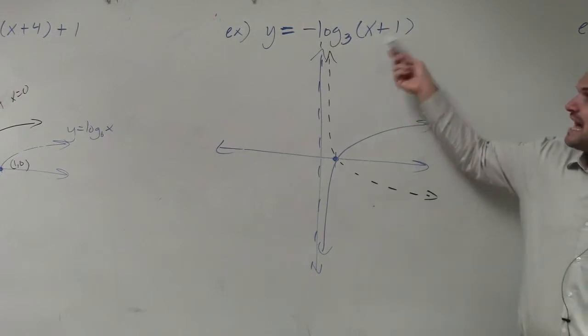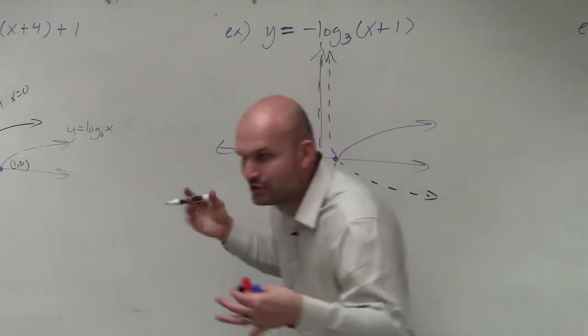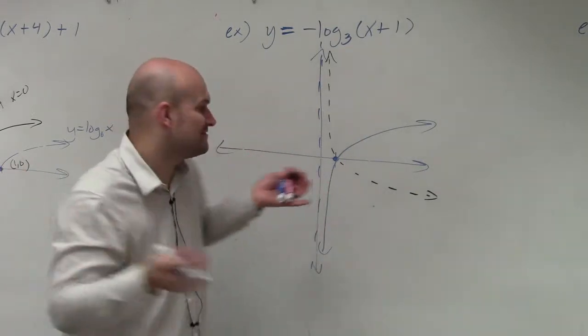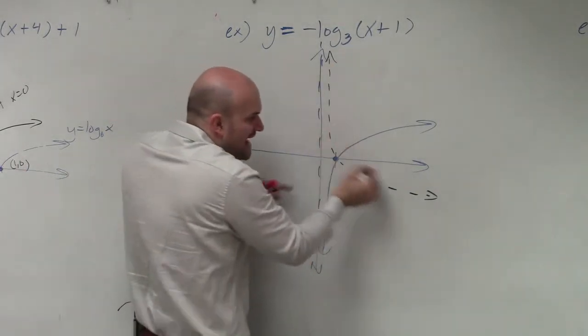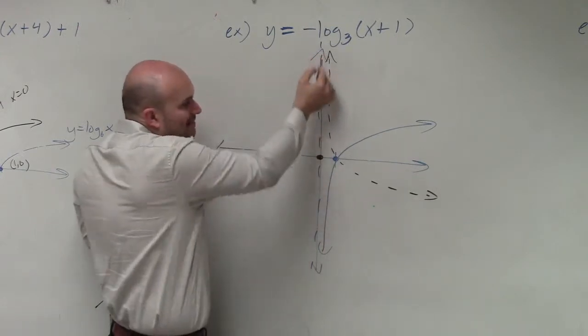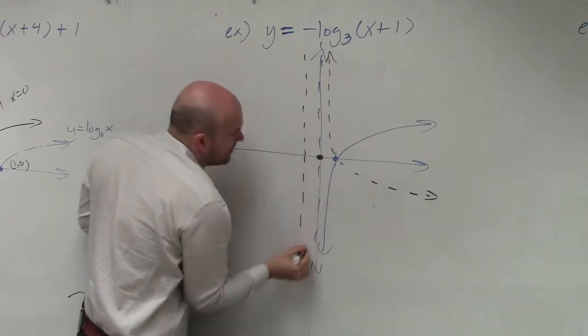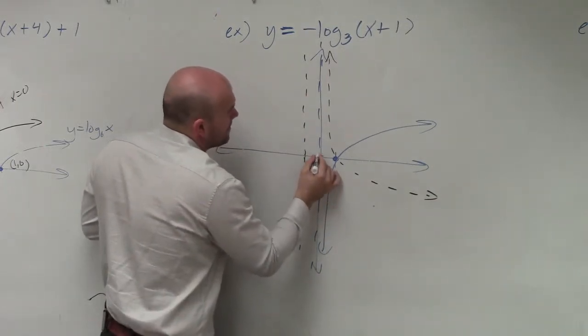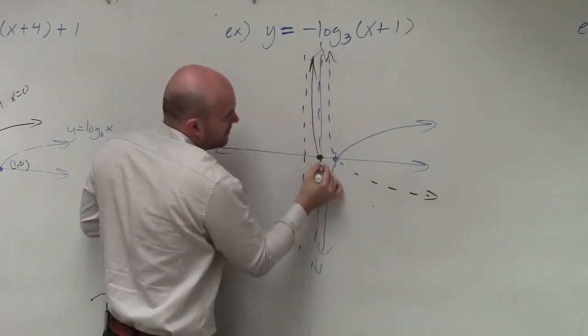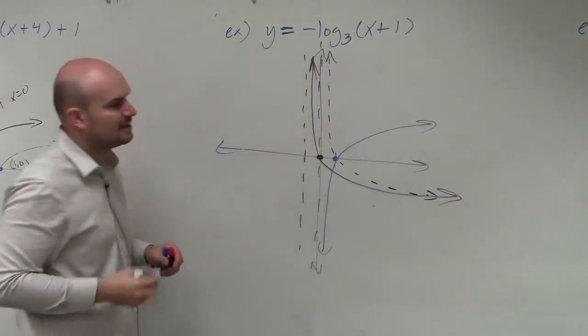The other transformation I have is x plus 1, which is going to tell me to shift my graph one unit to the left. So now I just take this little dashed line. I move it over here. I take my new vertical asymptote and move that right here.